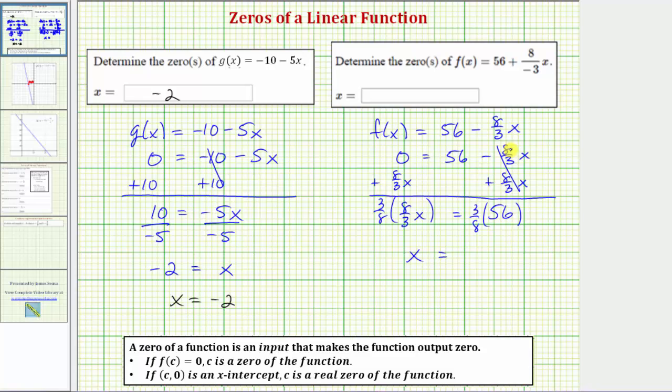To find this product, let's write 56 as a fraction with a denominator of one. And now before multiplying, we'll simplify.